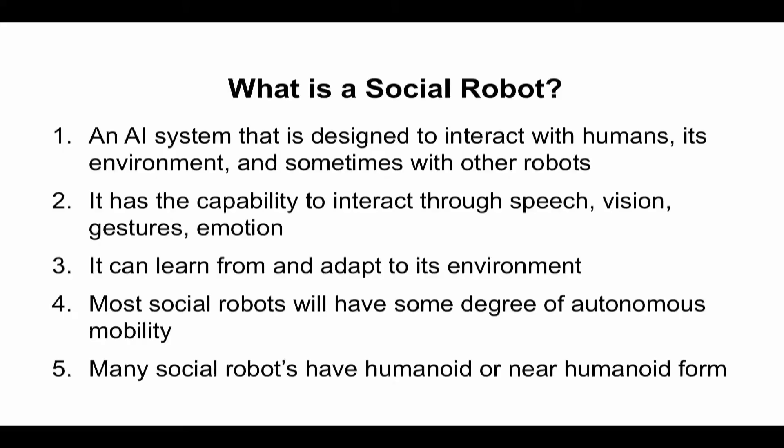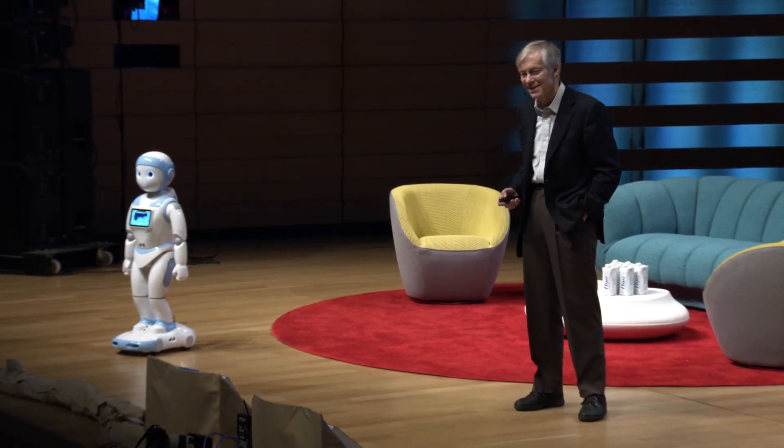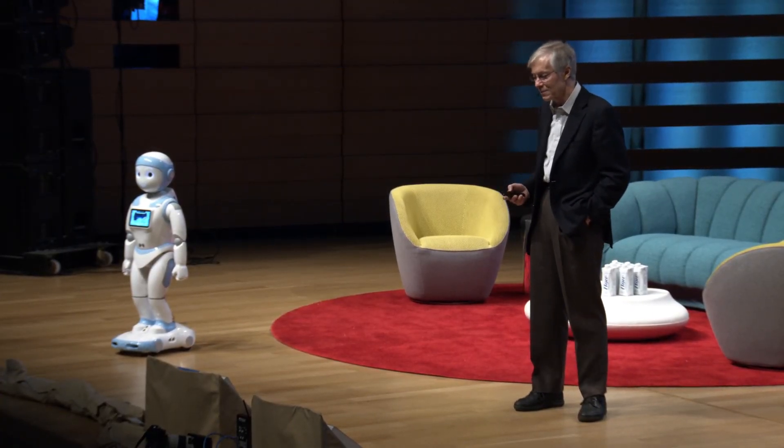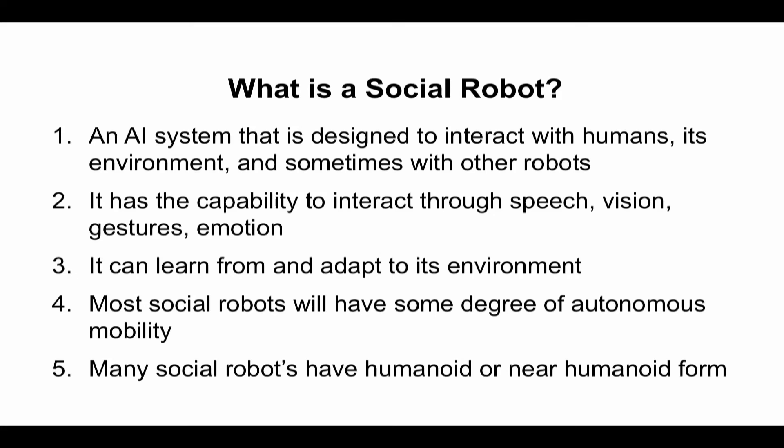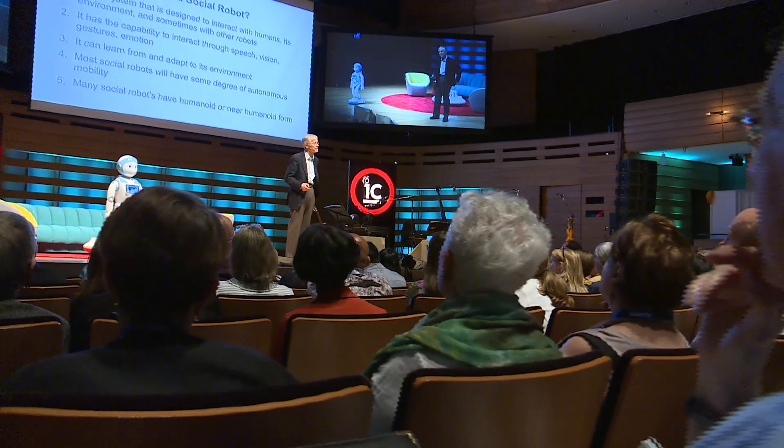There are many definitions of what a social robot really is. One definition is an AI system designed to interact with humans, its environment, and sometimes with other robots. It has the capability to interact through speech, vision, gestures, and emotion. Emotion is actually quite important in terms of how people perceive robots and how they like them. It can learn from and adapt to its environment — this is extremely important. And most social robots have some degree of autonomous mobility, and many are humanoid in form.